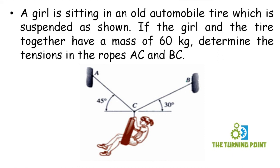A girl is sitting in an old automobile tire which is suspended as shown. If the girl and the tire together have a mass of 60 kg, determine the tensions in the ropes AC and BC.